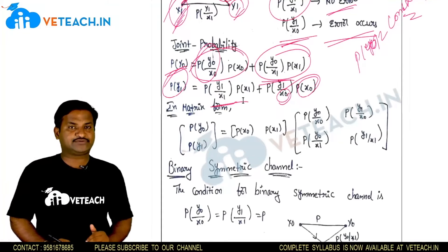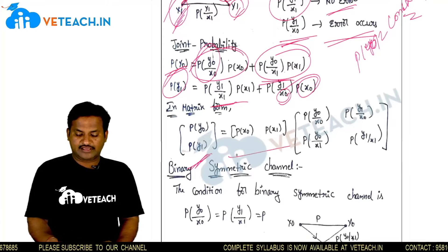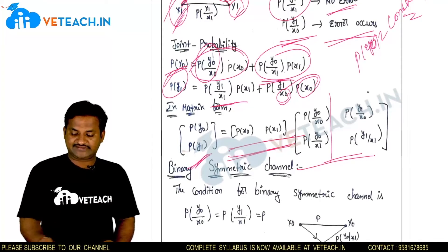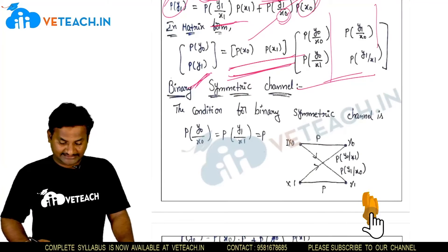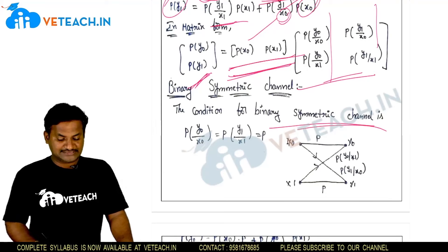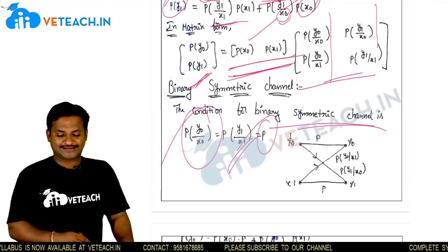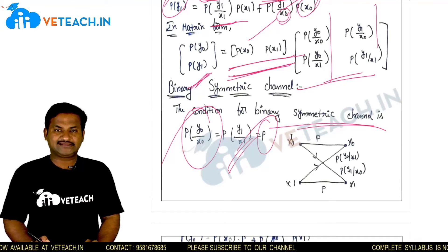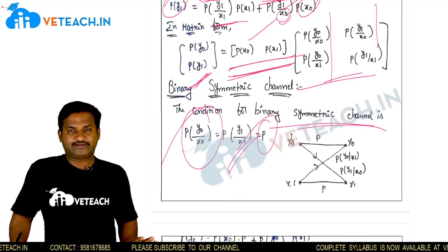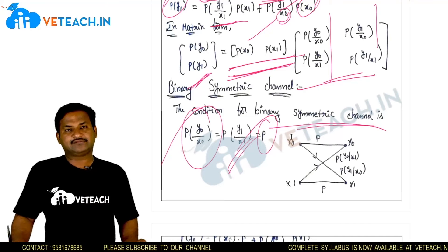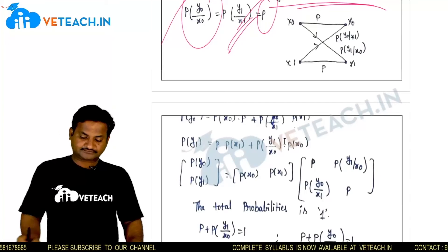What is a binary symmetric channel? The condition for a binary symmetric channel is that p(y0|x0) = p(y1|x1), represented by p. In a binary communication channel, we substitute the value of p(y0|x0) and p(y1|x1) with p, and the binary communication channel can be converted into a binary symmetric channel.